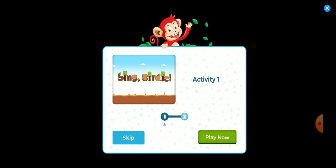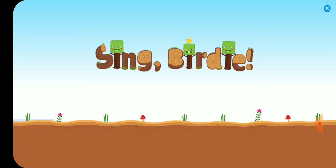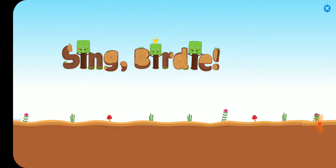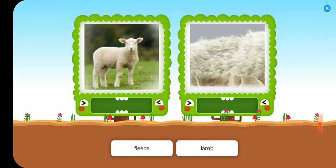Activity one. Sing, birdie. Drag the text to match the pictures. Fleece. Lamb.